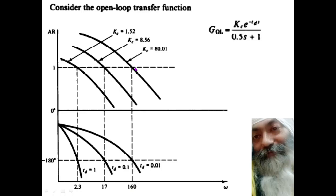In case this is quite acceptable as such. In case this time delay increases from 0.01 to 0.1, then this crossover frequency reduces to 17-18 and the ultimate gain also reduces to 8.56. And in case this delay is one minute, then what happens? In that case, the crossover frequency becomes 2.3, which is definitely on the much, much lower side, and accordingly the ultimate gain also becomes very less—it's just 1.52.